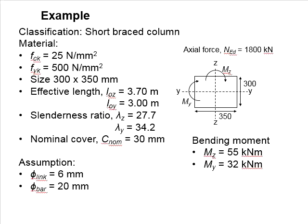Let us try this example to design a short braced column which is bending in both axes. The concrete strength is 25 N/mm². The steel grade is 500. The column size is 300 by 350 mm. The effective length in the z-axis is 3.7 meters while the effective length in the y-axis is 3 meters.